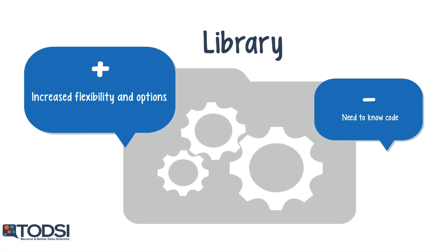A software library is a set of functions and modules that you can call through your own code in order to perform certain tasks. Deep net libraries give you a lot of extra flexibility with net selection and hyperparameter configuration. For example, there aren't many platforms that let you build a recursive neural tensor net, but you can code your own with the right deep net library. The obvious downside to libraries is the coding experience required to use them, but if you need the flexibility, they really are a great resource.